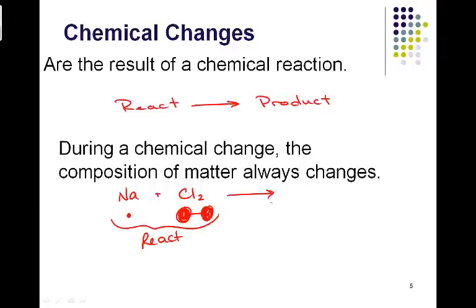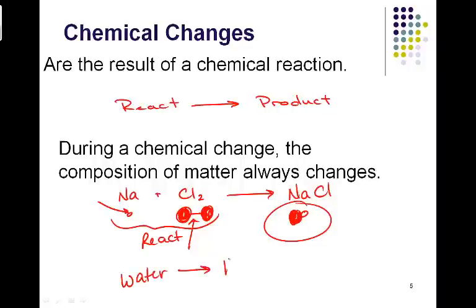We have our arrow simulating the change and we create sodium chloride, NaCl. So here we see a difference between our single sodium atom, our two chlorine atoms bonded together, and our NaCl is something different. Just like we saw when we took our water and broke it down into hydrogen gas and oxygen gas. Water was different than the hydrogen and the oxygen. So how can we tell if a chemical change has occurred?